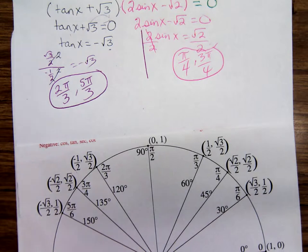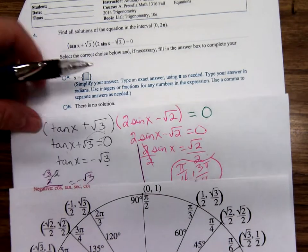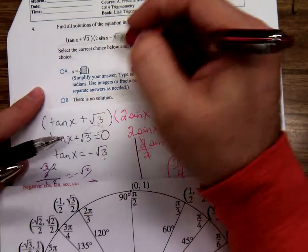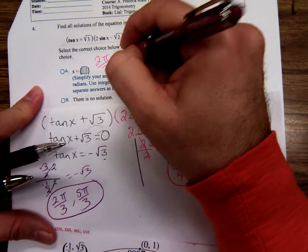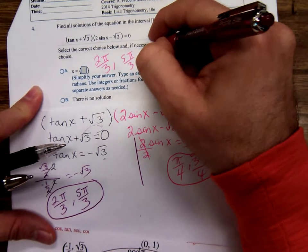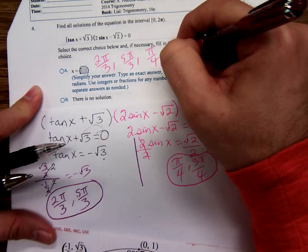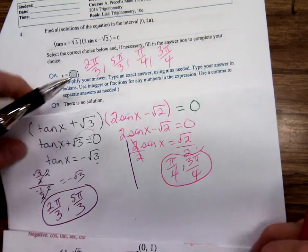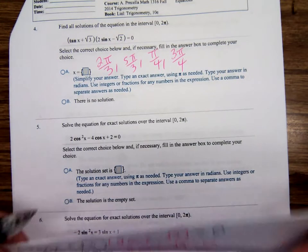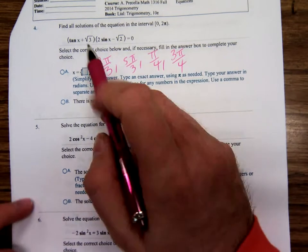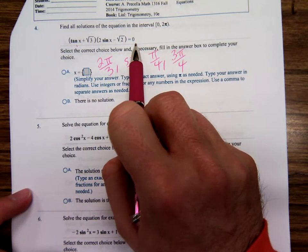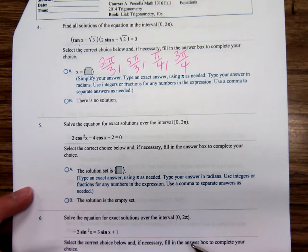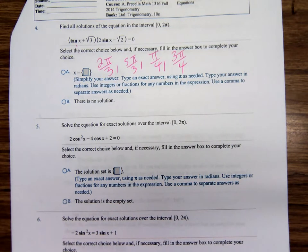Any questions there? That would be the answer for number four. I'll type in 2π over 3, comma, 5π over 3, comma, π over 4, comma, 3π over 4. So if you have an equation where it's factored on one side with a zero on the right, it's pretty easy. Just set each one of those factors to zero.